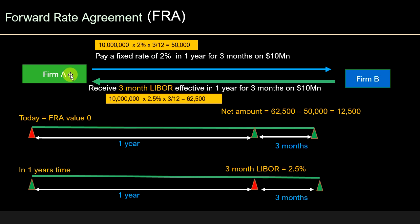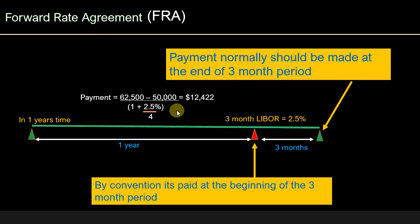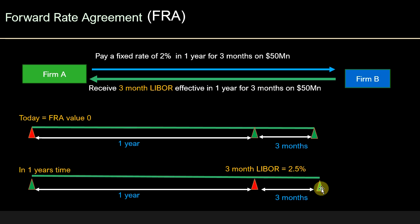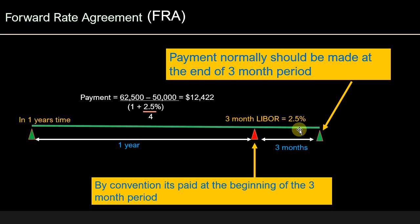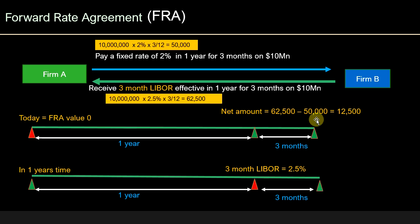There are important details when valuing a forward rate agreement. Payment normally should be made at the end of the three-month period, but by convention — standard practice — it is paid at the beginning of the three-month interest period. So even though normally payments are made at the end of the interest period, both parties can exchange payments at the beginning of that interest period. This means the net amount of $12,500 must be discounted and then exchanged.